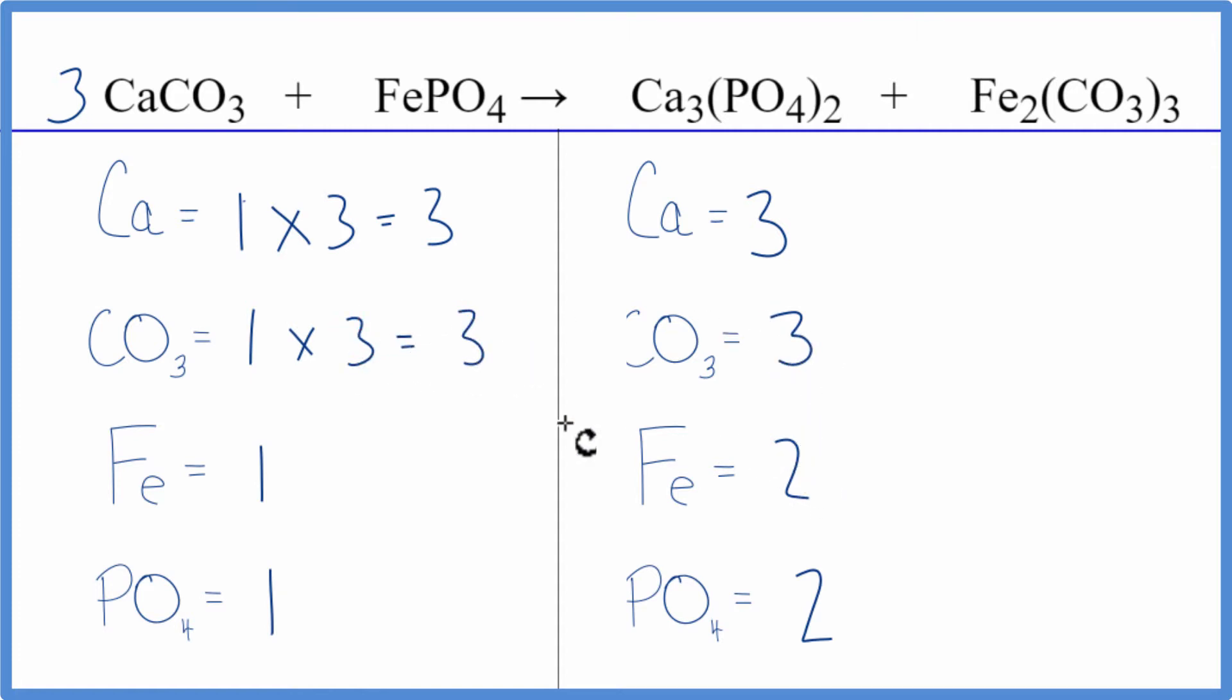I have two irons here and one here. I'll put a two in front of the FePO4, the iron-3-phosphate. One times two gives me two iron atoms. Those are balanced. And then my phosphate, I have one here, times two, gives me two of those. And we're done.